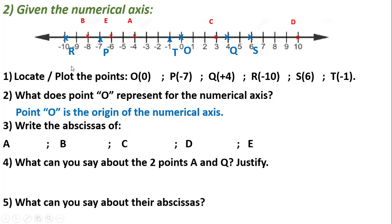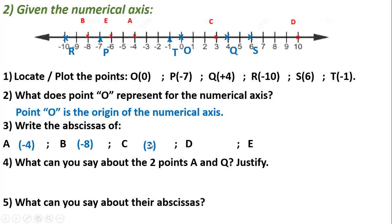Point A is located on minus 4, so the abscissa of A is minus 4 — written as A(-4). B is located on minus 8, so the abscissa of B is minus 8. C is located on positive 3, so C has abscissa 3. Please pay attention: we write the abscissa in parentheses, not with an equal sign. D is located on positive 10, so D has abscissa 10. E is located on negative 6.